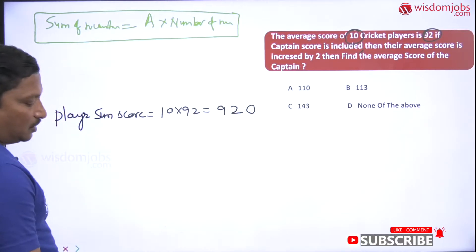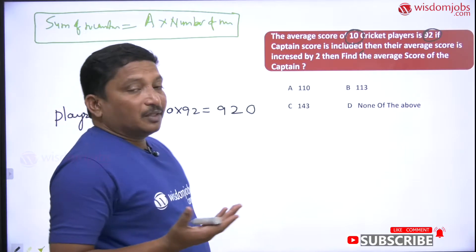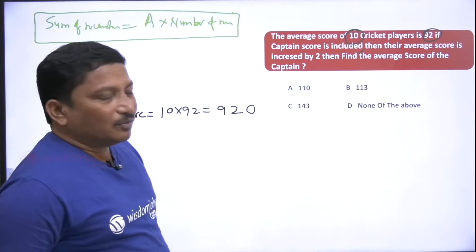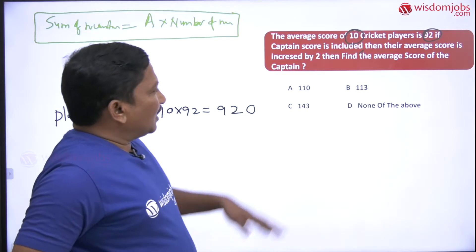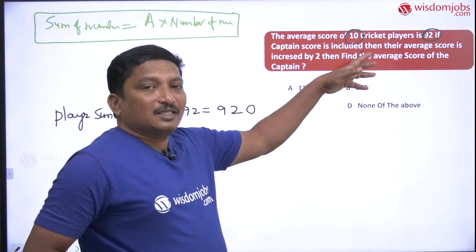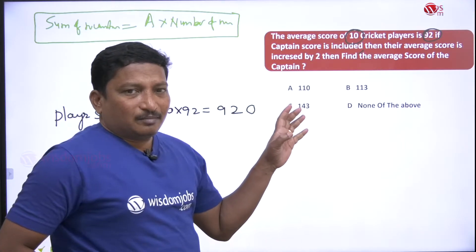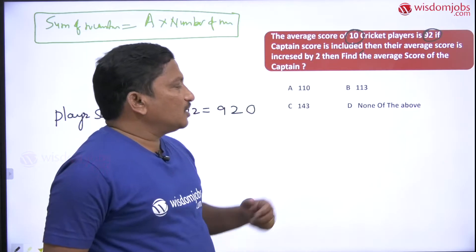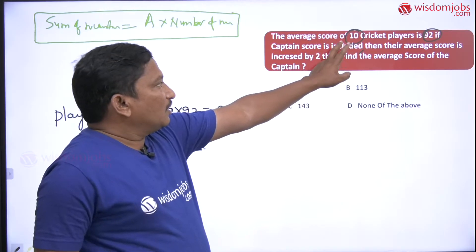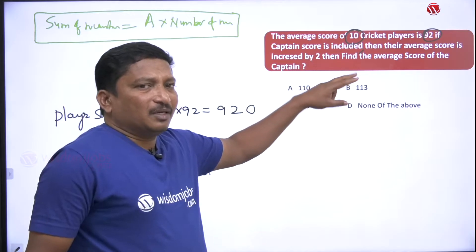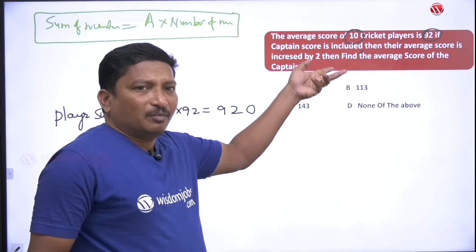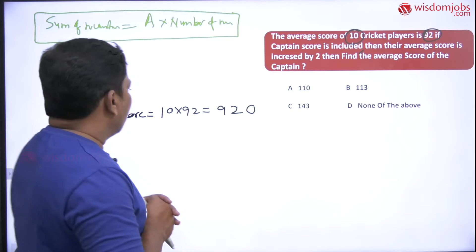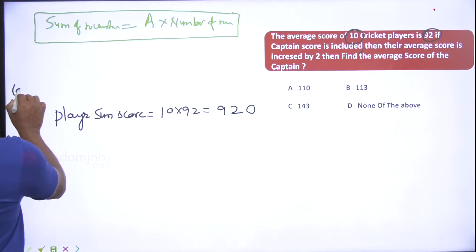Taking the 10 players initially: the sum of scores of the 10 players equals 10 multiplied by 92, which is 920. So the sum of the players' scores equals 920.